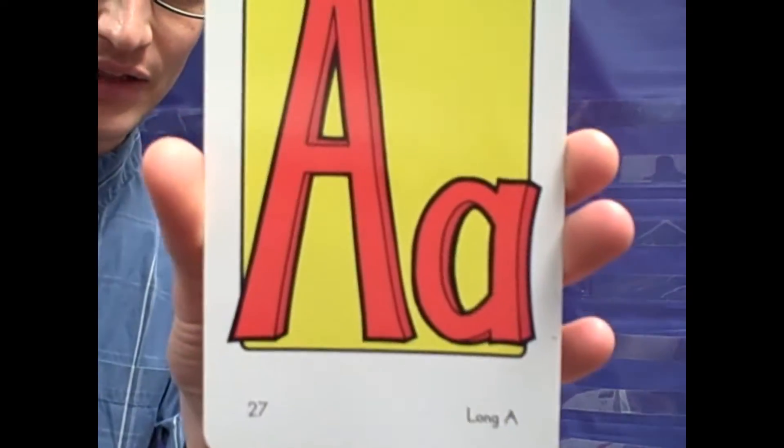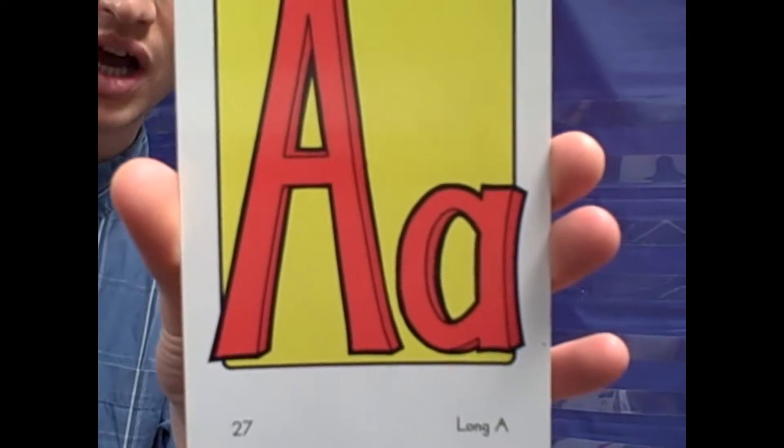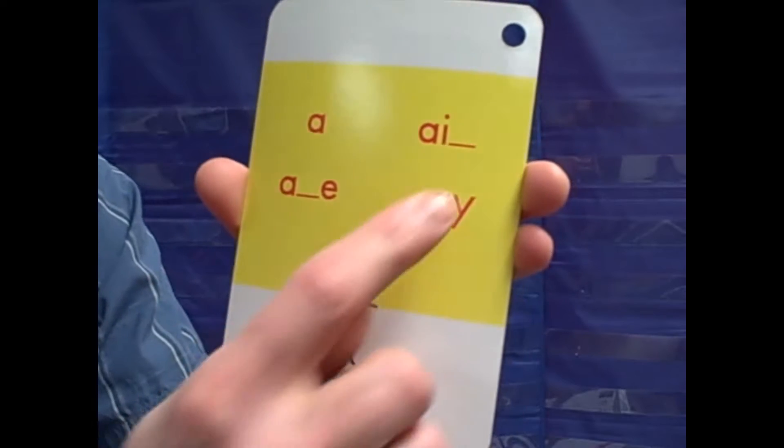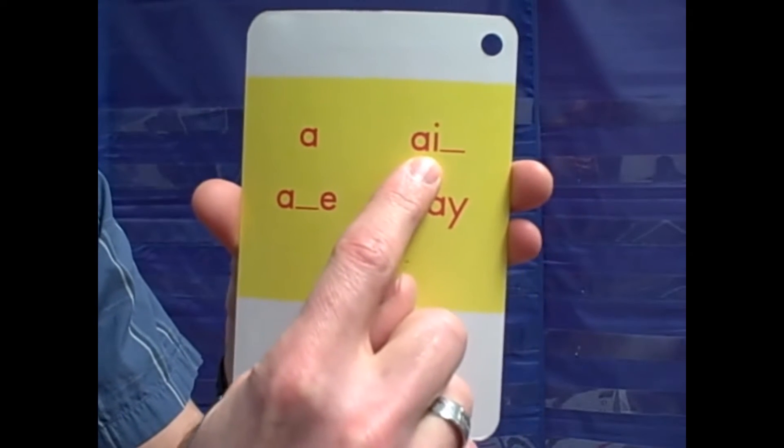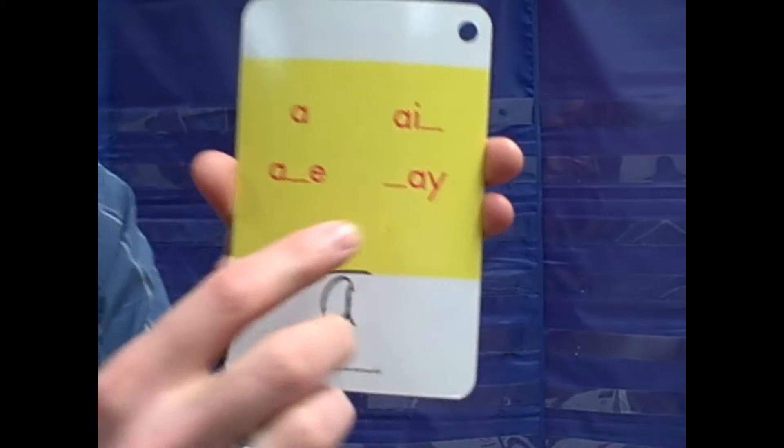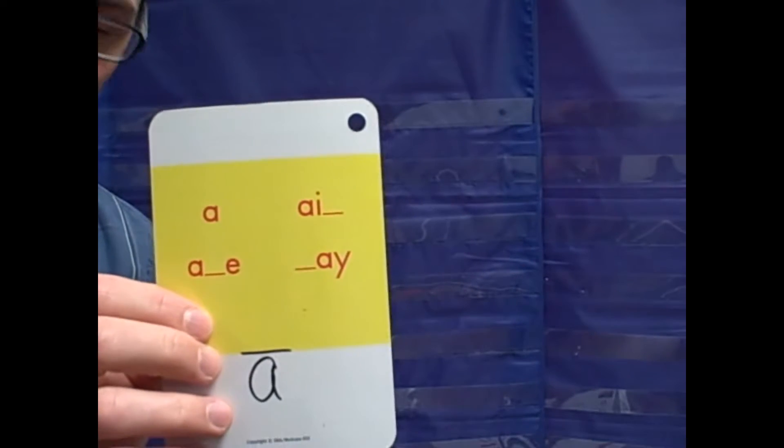First, we'll look at this. This is the sound spelling card for long A. On the back of the sound spelling card, you will see the spelling AI spells A, and also AY spells A. I have two pictures to show those.